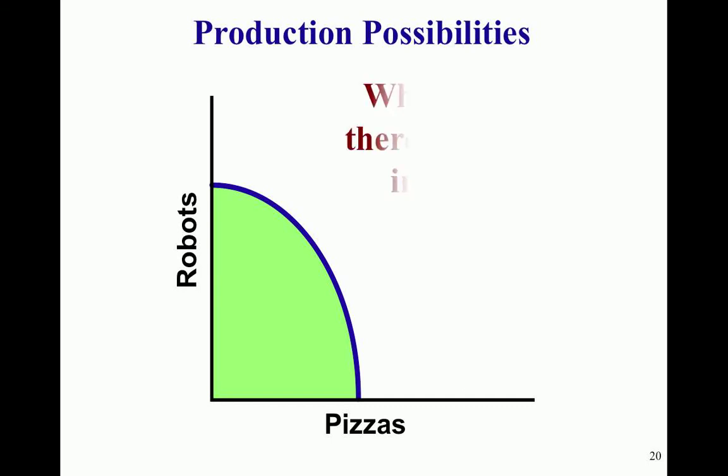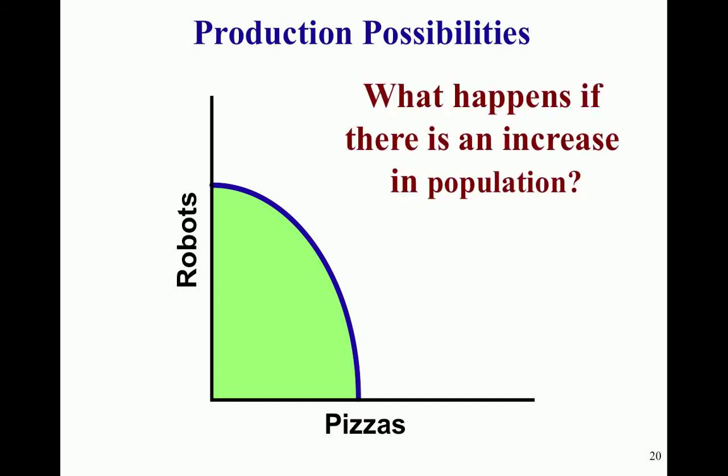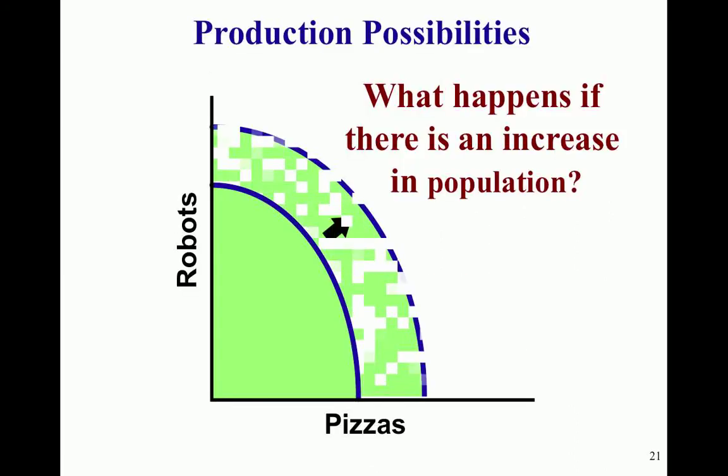Using our pizza and robot example — what do you suppose might happen if there's an increase in population? Feel free to pause it. If there's an increase in population, you should see both going up, something like that — there's more labor available for producing both robots and pizzas.